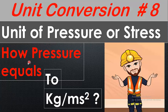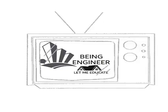In this video, we are going to know how pressure equals kg per meter second square. As we know that pressure is equal to F divided by A. So, how come this unit is the unit of pressure? Let's get started.